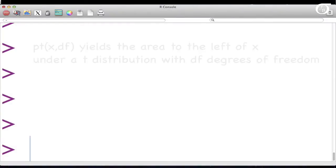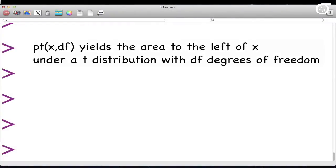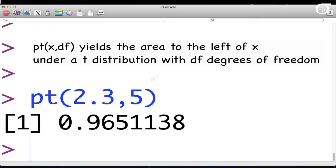The command PT gives the area to the left of the value we give it under a t-distribution with the appropriate degrees of freedom. So here if we put in PT, we're asking R to give me the area to the left of 2.3 under a t-distribution with 5 degrees of freedom. And R tells us that that area is about 0.965.